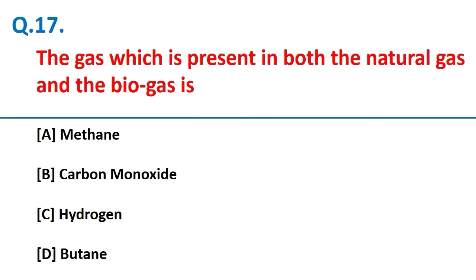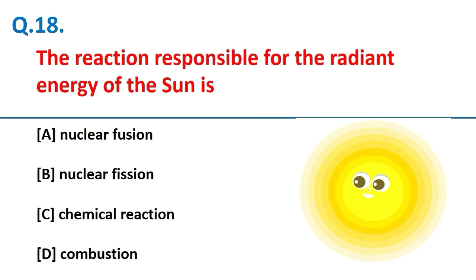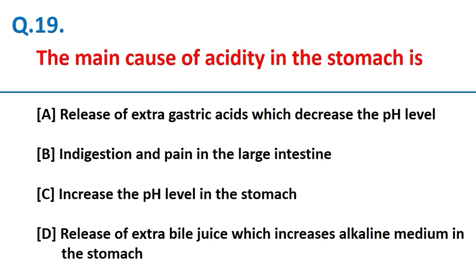The gas which is present in both natural gas and biogas is methane. The reaction responsible for the radiant energy of the sun is nuclear fusion. The main cause of acidity in the stomach is the release of extra gastric acid, which decreases the pH level.